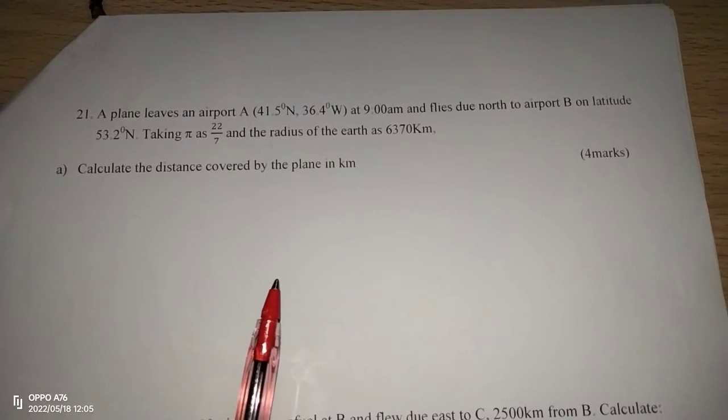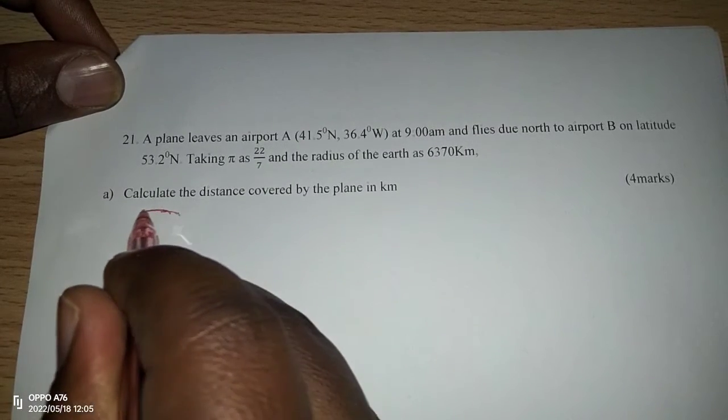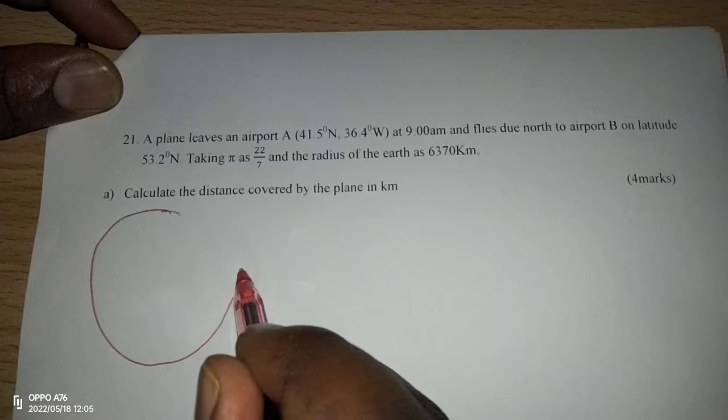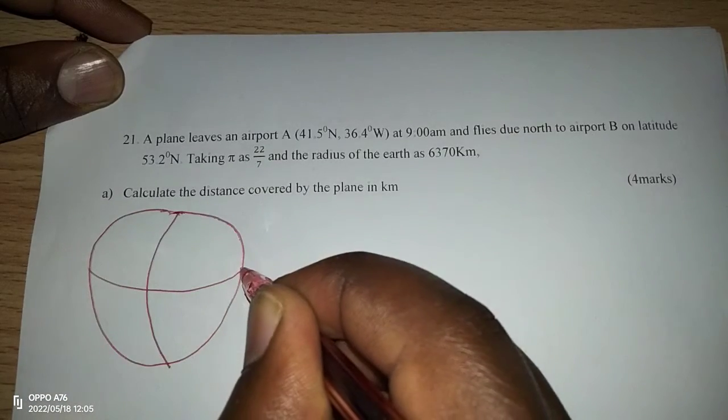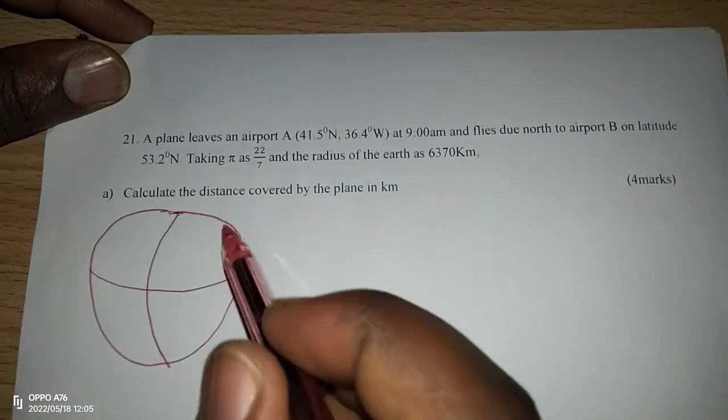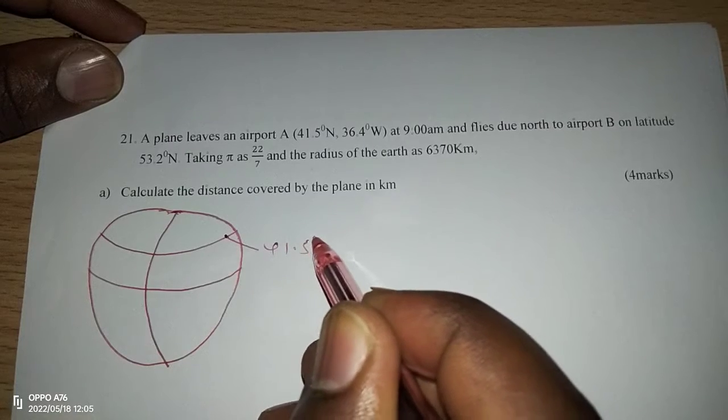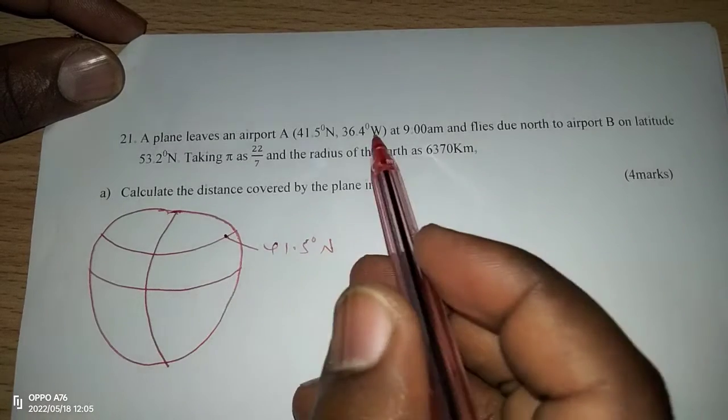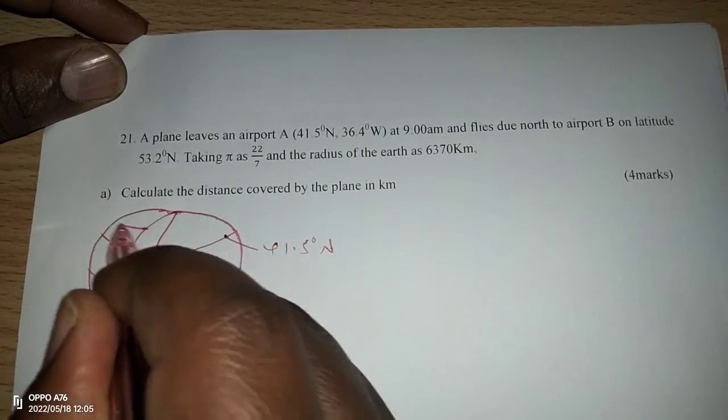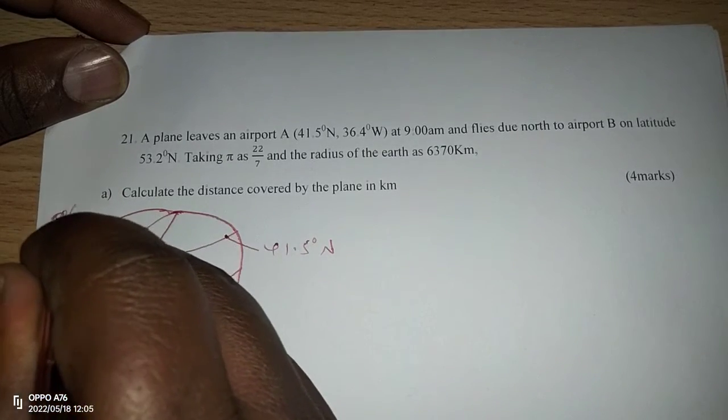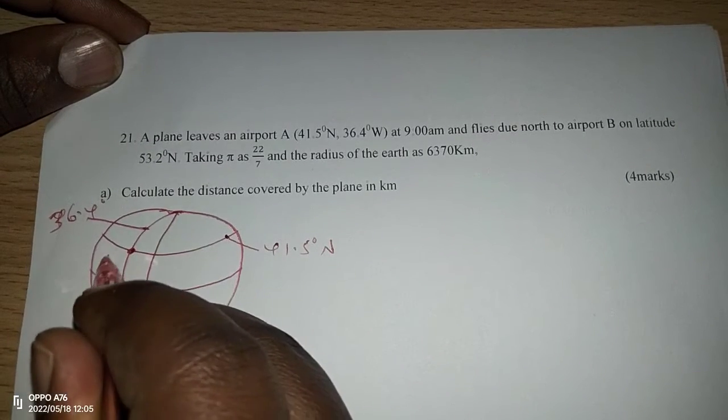Remember to subscribe to this channel and share the link with your friends. We are going to look at the positions on the earth's surface of some airports here. If this is the prime meridian and this is the equator, then we are told on latitude 41.5 degrees in the north, and longitude 36.4 in the west. We have a plane at airport A.